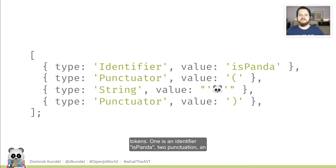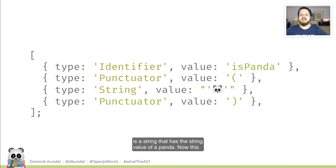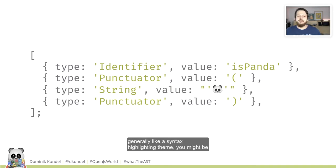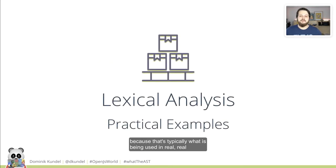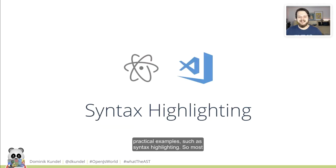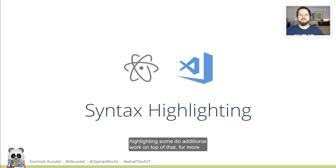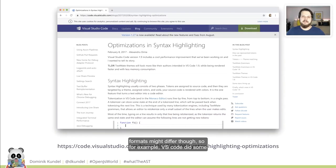We get four tokens. One is an identifier: isPanda. Two punctuators: an opening and a closing parenthesis. And in between, a string that has the string value of a panda emoji. If you've ever written a code editor theme or a syntax highlighting theme, you might be familiar with these words — identifier, punctuator, string — because that's typically what is used in syntax highlighting. Most code editors use tokenization to do syntax highlighting; some do additional work on top for more advanced highlighting. But at least the basic syntax highlighting is often done by tokenization. The token formats might differ though.